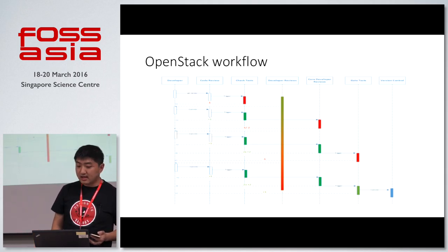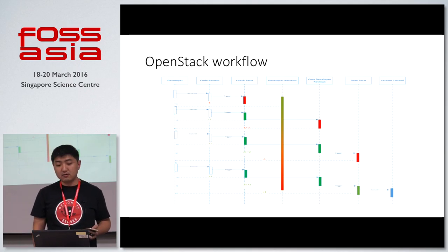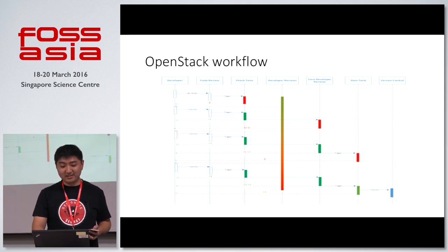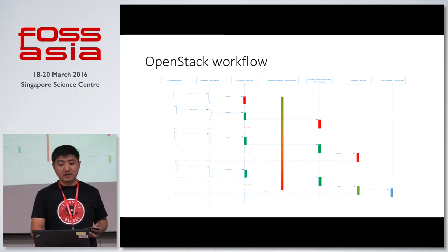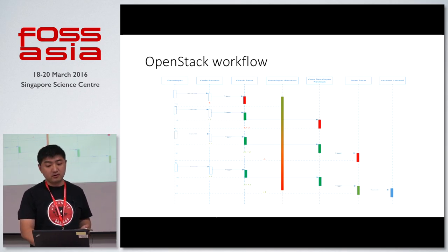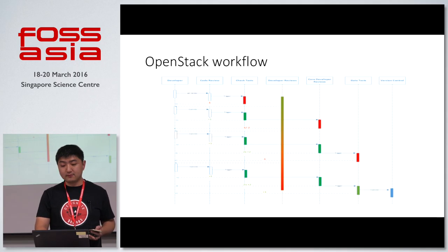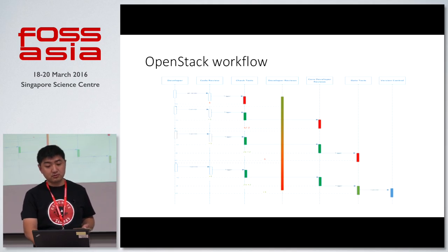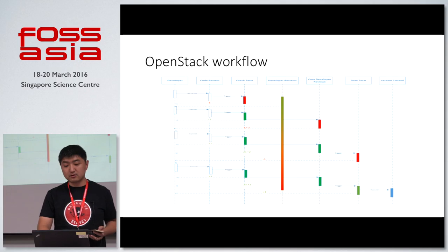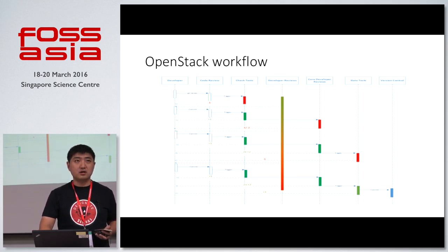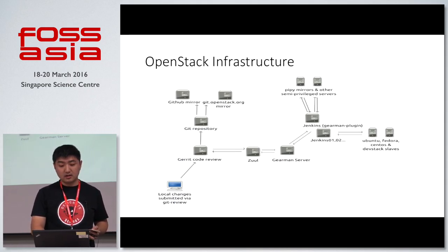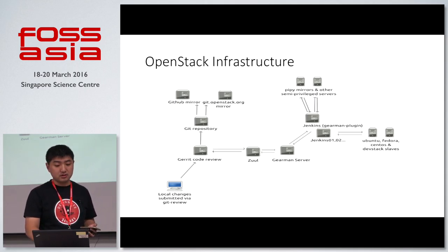OpenStack introduced a new way for the CI workflow and introduced a new system called Gerrit. Gerrit is a code review system, and the big difference from the typical workflow is in version control. The OpenStack workflow only commits changes to the version control system after all changes have been approved by the code reviewers. This is the infrastructure that supports the workflow.